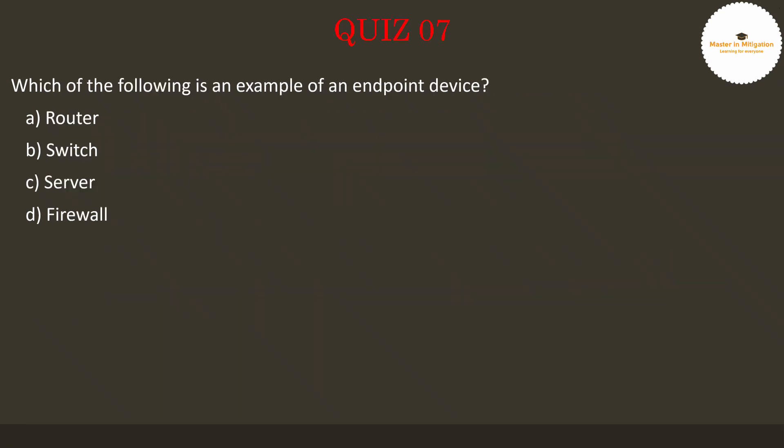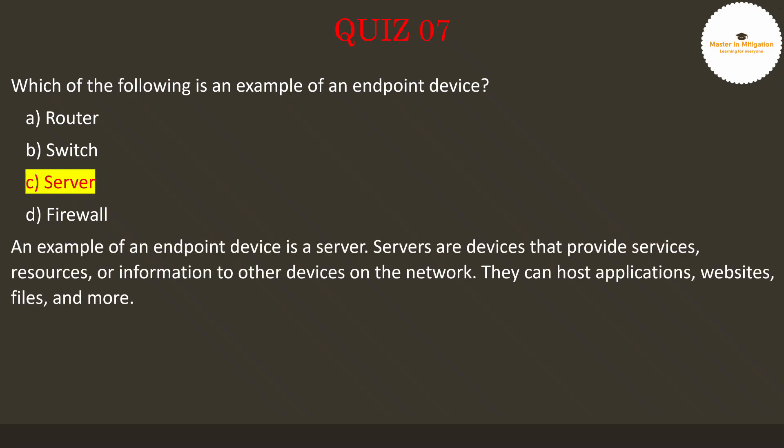Let's go to question 7. Which of the following is an example of an endpoint device? Pause the video now to select the best answer. The answer is C — server. An example of an endpoint device is a server. Servers are devices that provide services, resources, or information to other devices on the network. They can host applications, websites, files, and more.